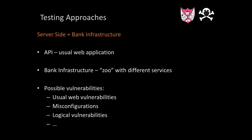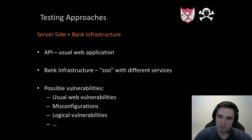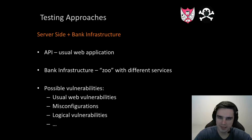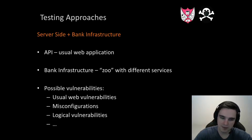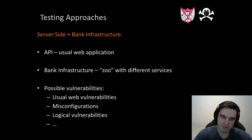Testing approaches for the server side: the API is a usual web application, while the bank infrastructure is a very complex thing — like a zoo with different services. It is very hard to hack without understanding how it works; you can try fuzzing and other things. The API can have any web vulnerabilities. If talking about possible vulnerabilities, you can take the OWASP checklist — any vulnerability most related to the server side. Also, it can be misconfigurations, like nginx misconfigurations and other things.